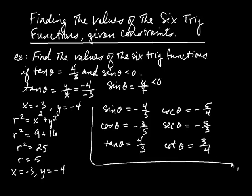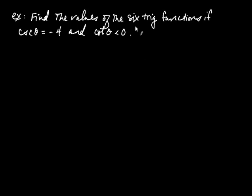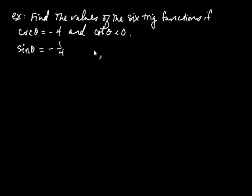Those are the values of the six trig functions given these two constraints. Now let's try another one. Find the values of the six trig functions if cosecant of the angle is negative four and cotangent of the angle is less than zero. Cosecant is hard to think about directly, so we use the fact that sine is always the reciprocal of cosecant — so sine must be negative one-fourth. Cotangent by definition is x over y, and we're told it's less than zero.